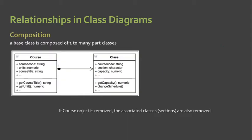We have composition. Another relationship that can be represented in a class diagram is composition. The UML representation shows composition as a filled diamond shape on the containing class end of the line that connects the contained class. The Course here is our containing class, and the Class here is our contained class.